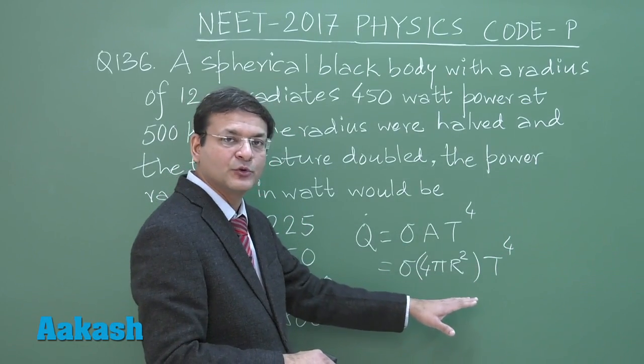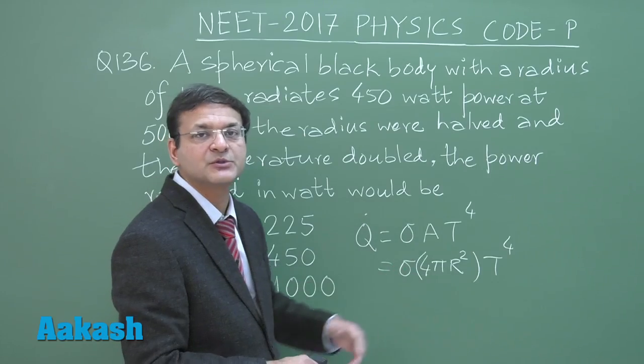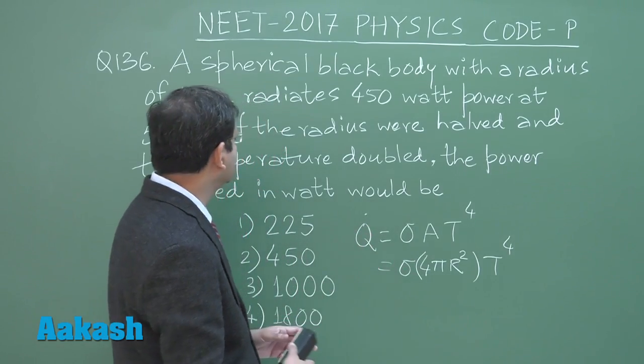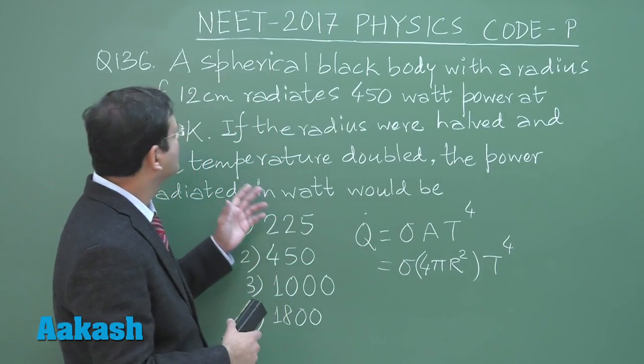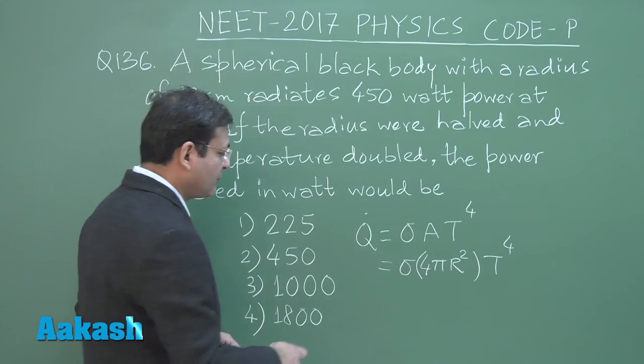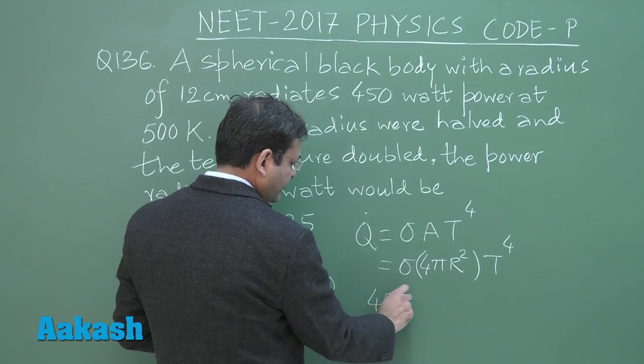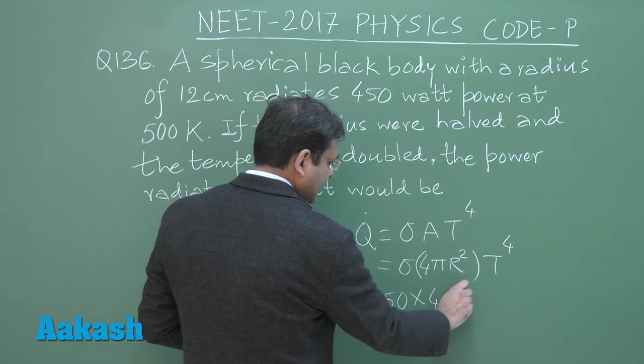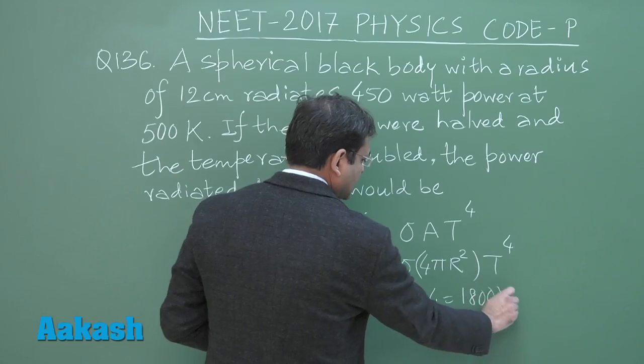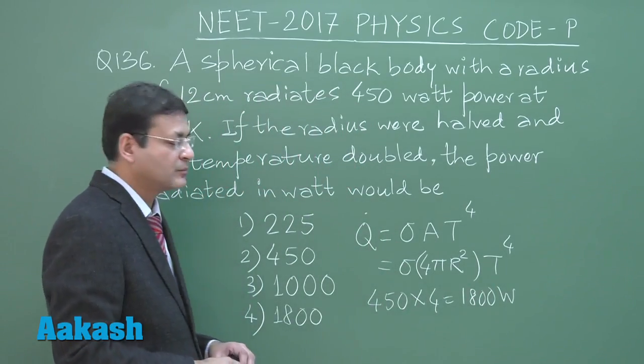In total, it is 16 divided by 4. Q value, 4 times whatever is the existing Q that is given to be 450 watt. Final answer, 450 into 4 that is equal to 1800 watt as per this Stephen's law.